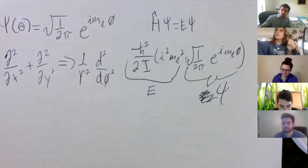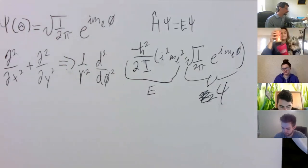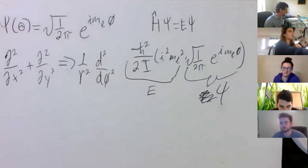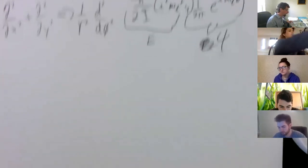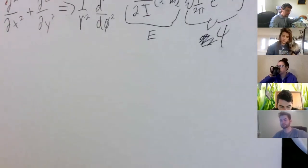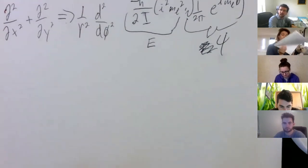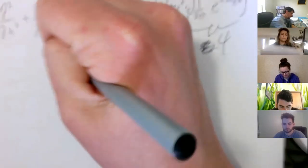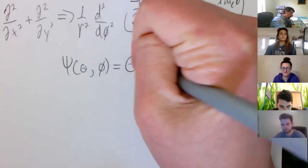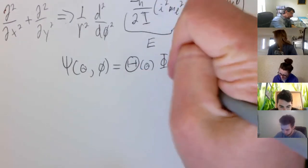Last time we were starting to talk about the system where we had a particle on a sphere, and we got to the point where we were trying to find a wave function. We said our wave function is separable—even though it depends on theta and phi, we can say it's made up of two functions, one that depends only on theta and one that depends only on phi.